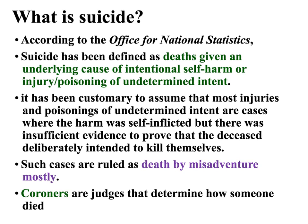To understand this, we need to look at where suicide statistics actually come from. According to the Office of National Statistics in the UK, suicide is defined as death given an underlying cause of intentional self-harm, or injury or poisoning of undetermined intent. Where injuries or poisonings have an undetermined intent but harm was inflicted and there's not enough evidence to prove it was intentional, they are generally ruled as death by misadventure. So if it's not completely clear that someone intentionally wanted to kill themselves, quite often it won't be ruled as suicide.